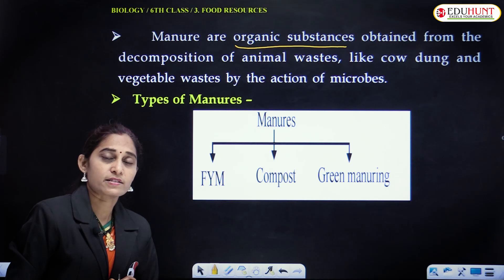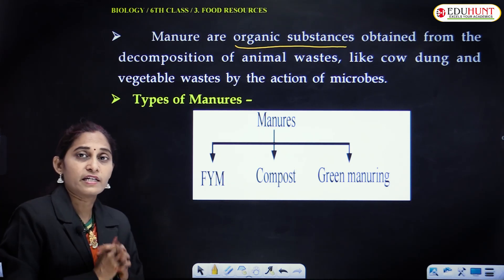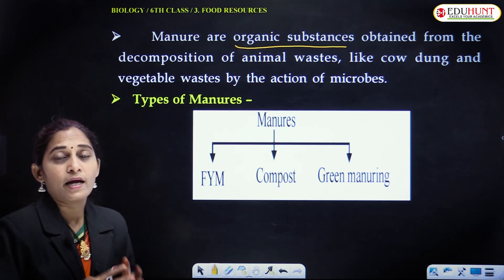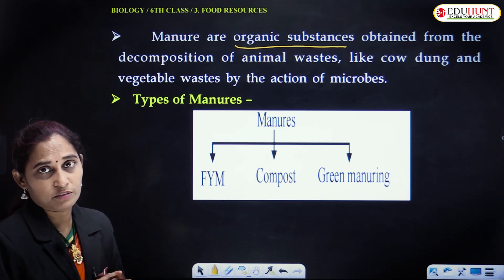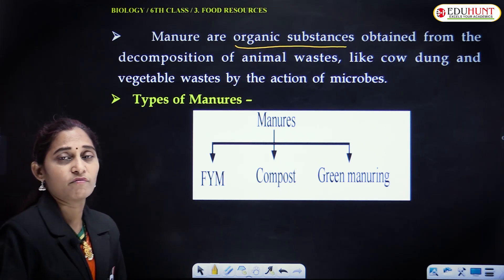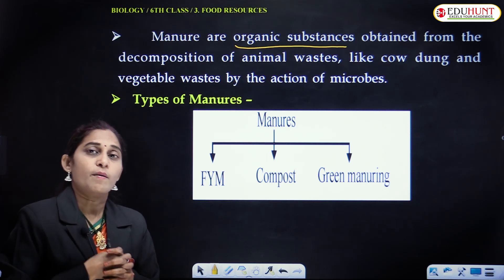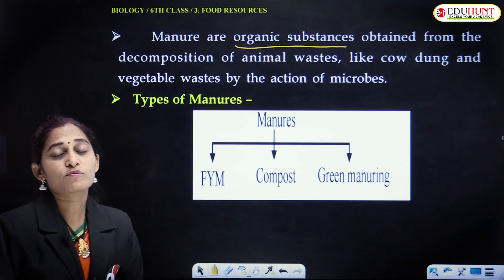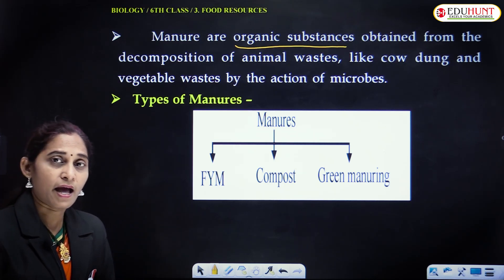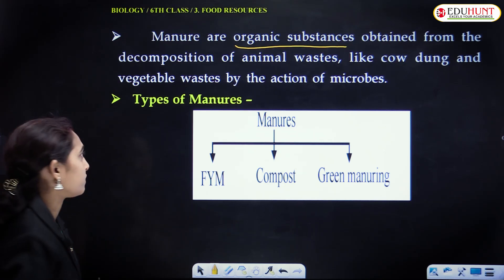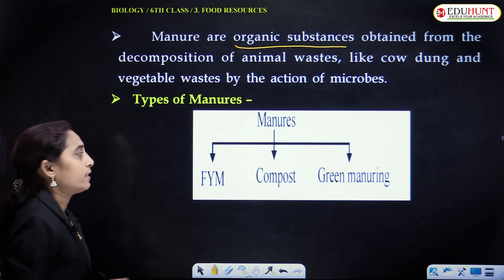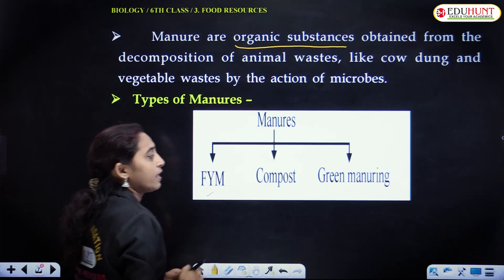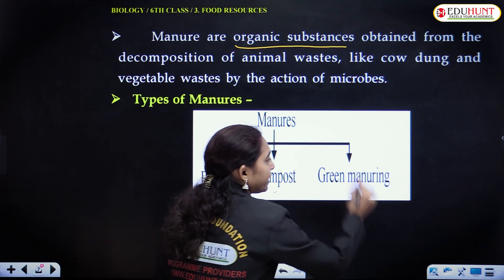Plants can take up these manures easily and grow well. Manures are organic substances — decomposed vegetable wastes, cow dung, and other animal wastes — which improve soil fertility and enhance crop growth and productivity. It improves the soil fertility and enhances the crop growth and productivity. There are different types of manures: farmyard manure, compost, and green manure.